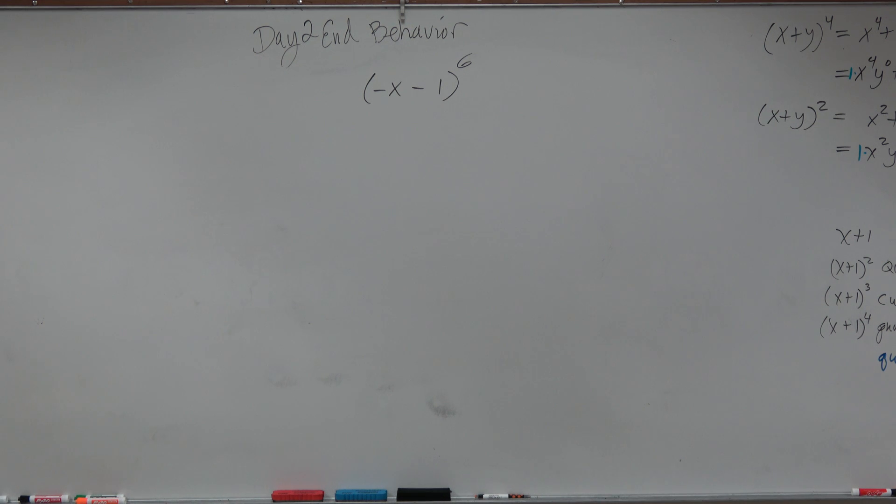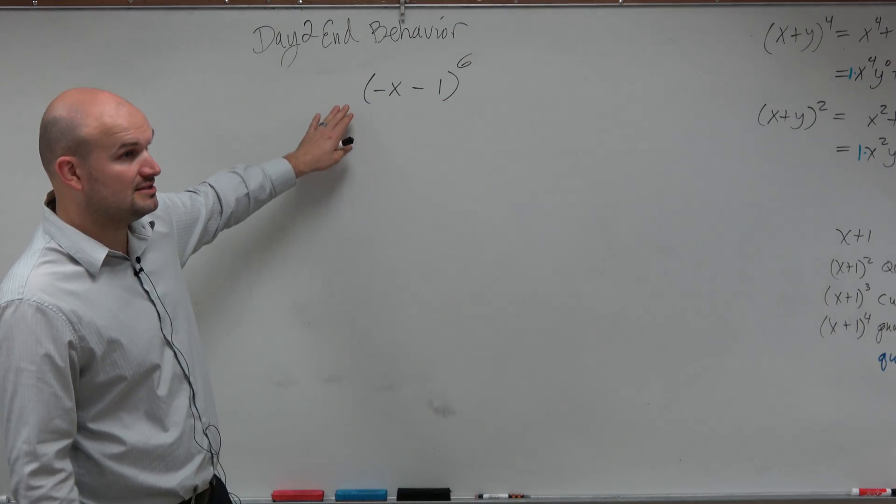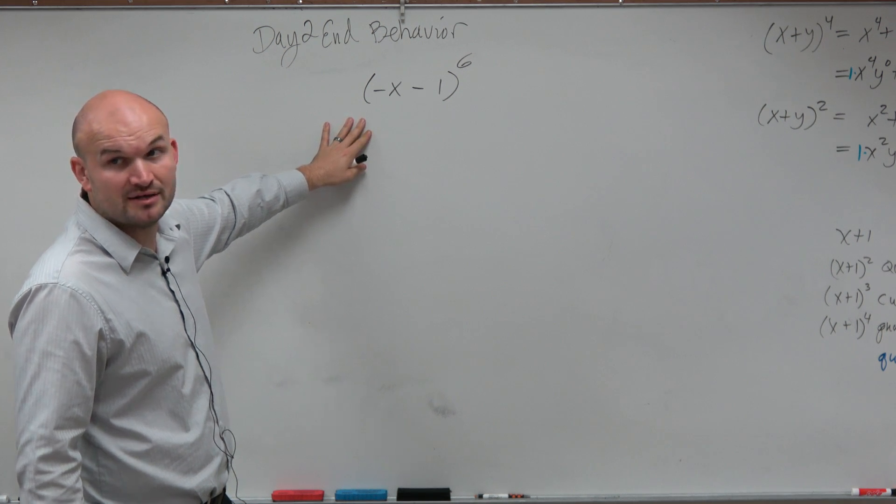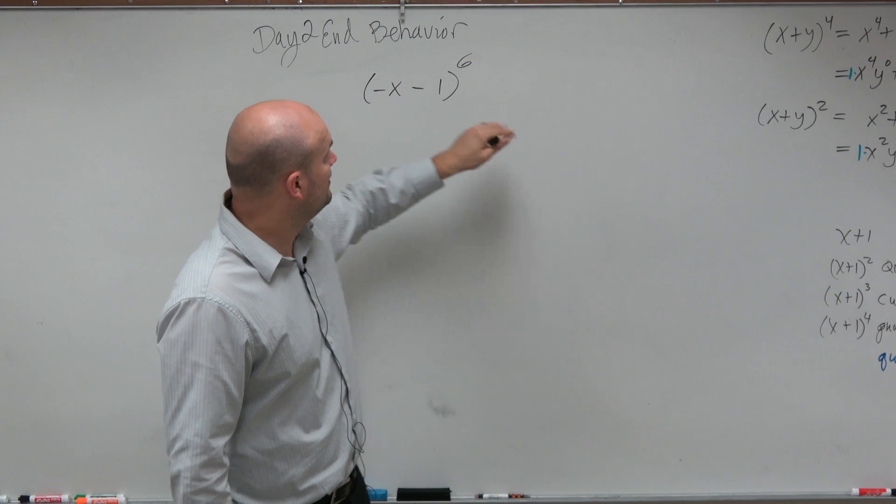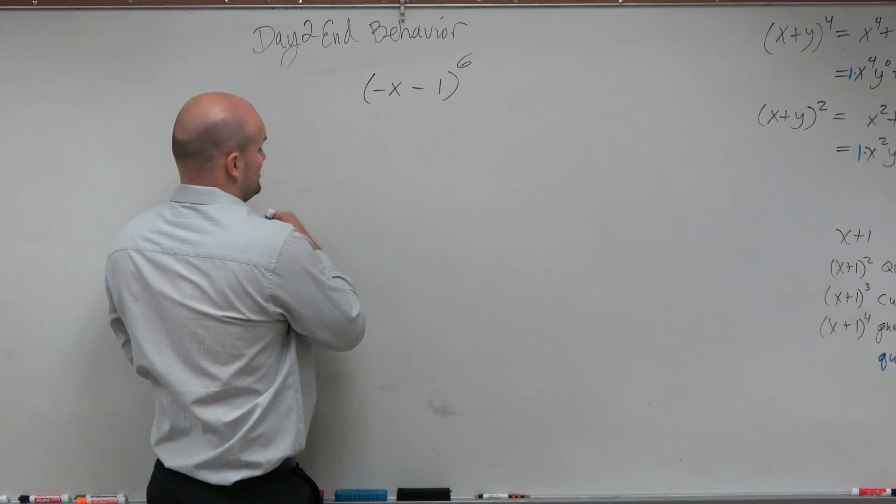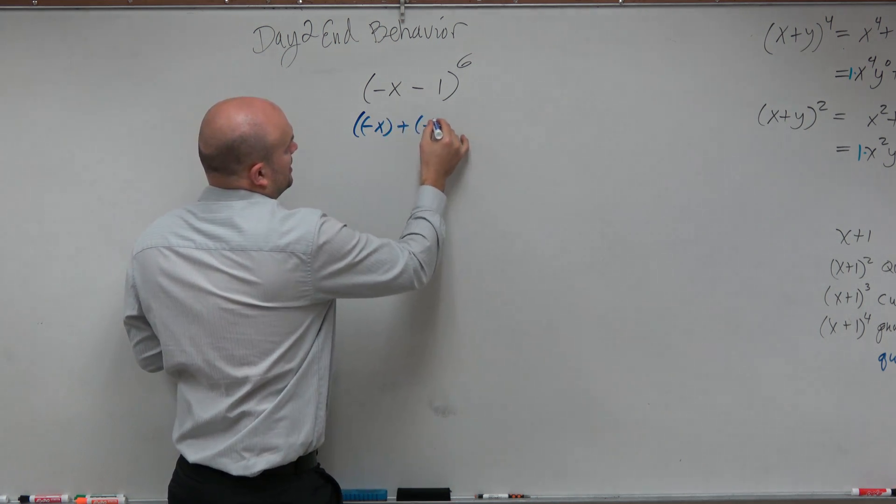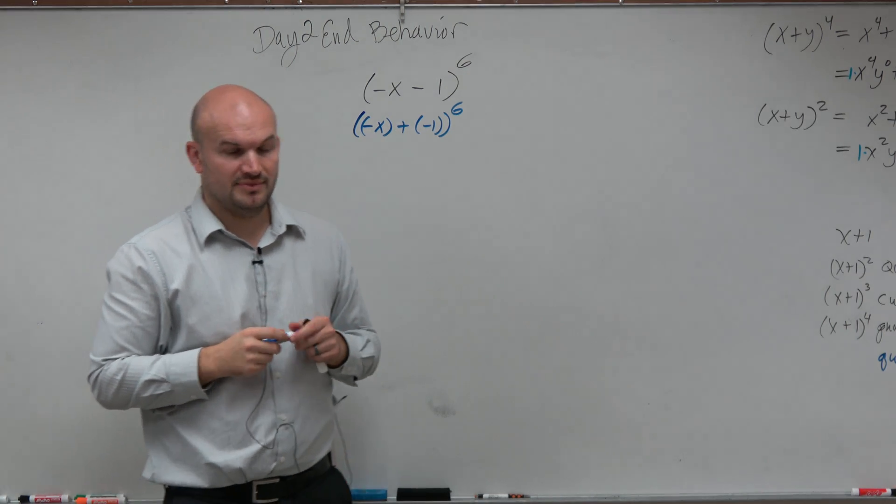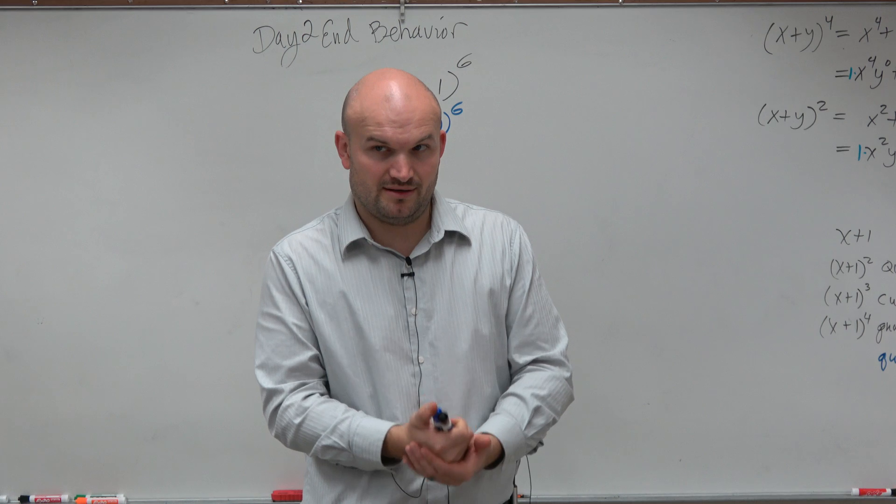So when applying Pascal's triangle, a couple things that we want to recognize with this to expand this binomial. The first thing is we got to recognize the patterns, and the first pattern we talked about with Ashley was noticing that we have ascending and descending terms. So we have two expressions. Now it also might be helpful to think of this as negative x plus a negative 1. Because if you're not using your parentheses correctly, there's going to be mistakes that are made and I'll show you.